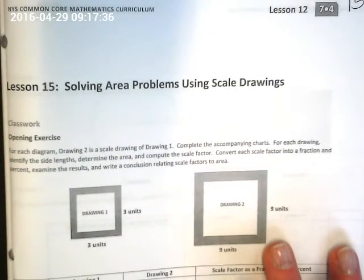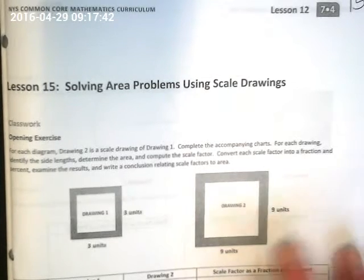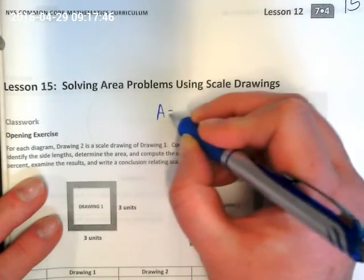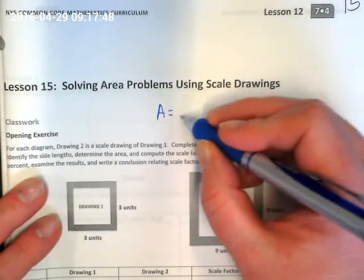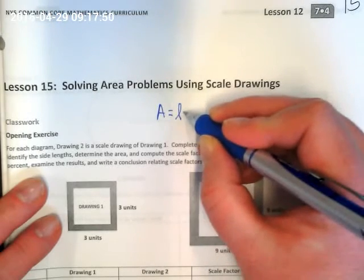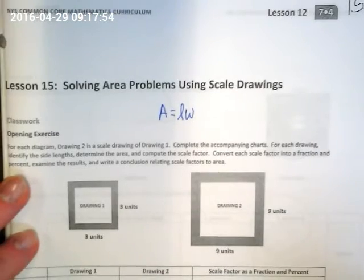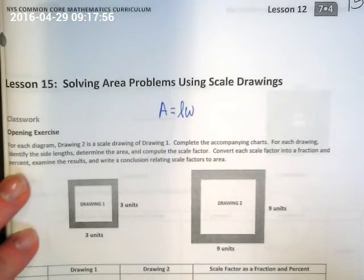So today we're looking at solving area problems using scale drawings. What do you guys know about area from the past? You multiply, area is equal to, there's a formula, where we multiply the length times width. And I like writing my cursive L's, so we'll write the formula A = lw a lot today.